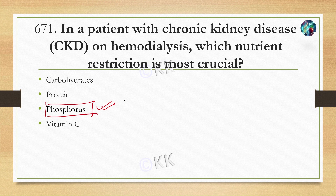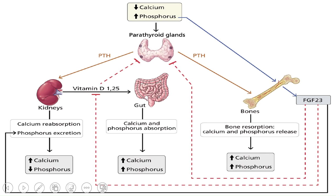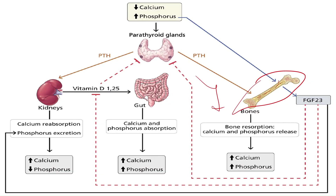In a dialysis patient, phosphorus is highly regulated to prevent hyperphosphatemia. Hyperphosphatemia has a severe impact on bone and cardiovascular health. So, let's look at the next question.